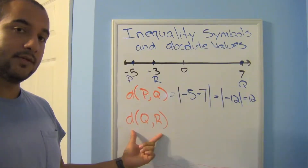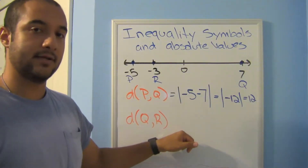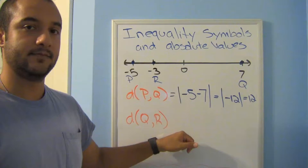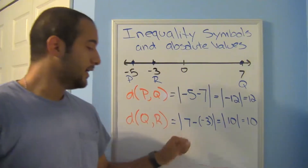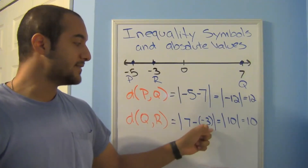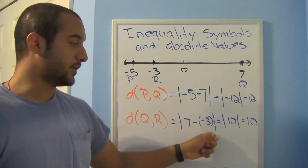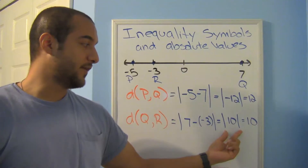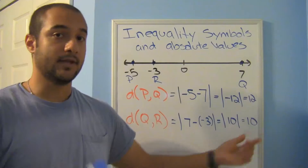Now what about the distance between q and r? Try this one out. Your answer should look like this: |7 minus negative 3|. Minus negative 3 turns into a positive, so this is really 7 plus 3, which is 10. The absolute value of a positive number stays the same, so the absolute value of 10 is 10. That's your final answer.